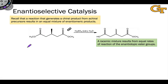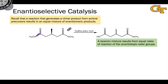Catalysis is critical for the selective generation of one of a pair of enantiomers in reactions that convert an achiral starting material into a chiral product. One example of a reaction that does this is shown here. It's an ester hydrolysis process starting from a substrate that contains two esters. The starting material is achiral.